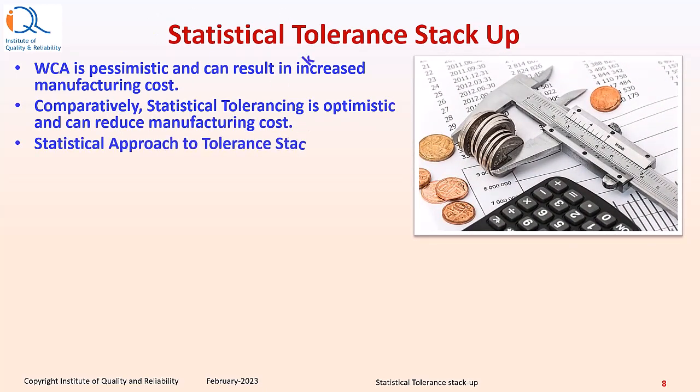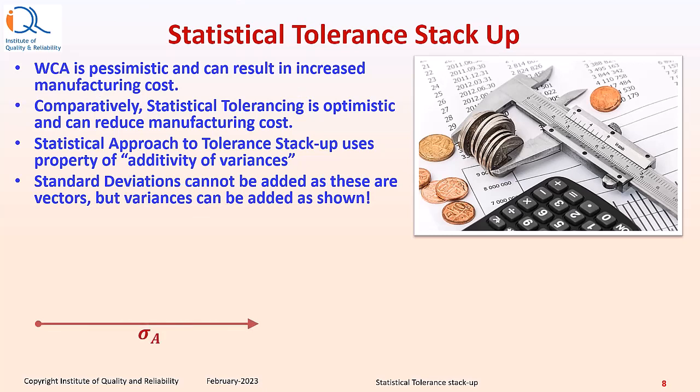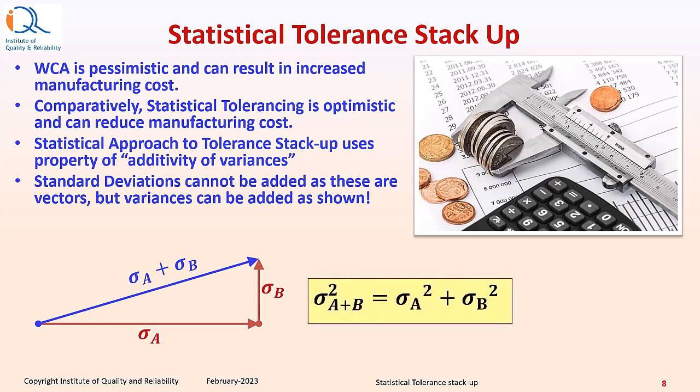Statistical approach to tolerance stack-up uses property of additivity of variances. Standard deviations cannot be added as these are vector quantities, but variances can be added as shown below. Sigma A is the first vector and sigma B is the second vector perpendicular to sigma A. So sigma squared A plus B equals sigma A squared plus sigma B squared, as these are perpendicular to each other.